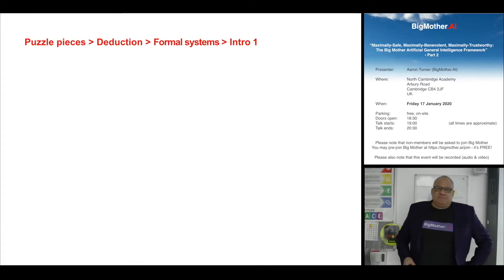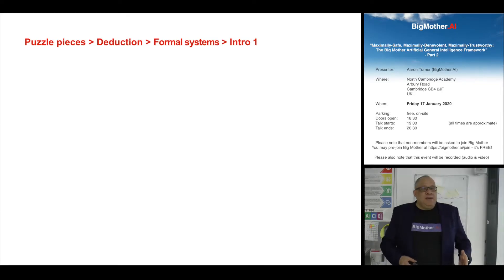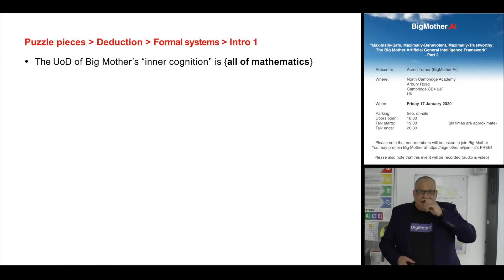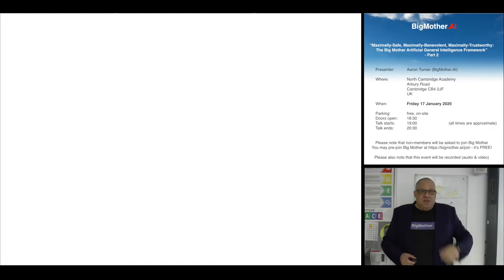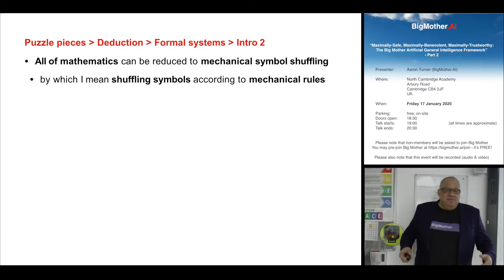Today's talk covers some technical stuff. We're going to talk about deduction and in particular formal systems. The universe of discourse of Big Mother's inner cognition is all of mathematics — that's a little map of all of mathematics — and all of mathematics can be reduced to mechanical symbol shuffling. Believe it or not, it's incredibly tedious, but it can be done.